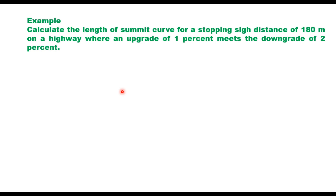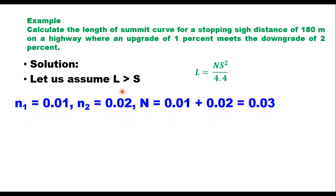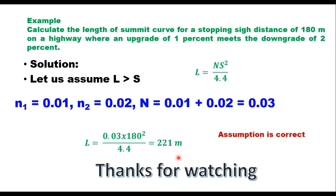Let us take one example: calculate the length of a summit curve for a stopping sight distance of 180 meters on a highway where an upgrade of 1% meets a downgrade of 2%. Assuming first that the length of the curve is more than the SSD, the equation is L = N·S²/4.4. Here N = n1 + n2 = 0.01 + 0.02 = 0.03, S = 180 m. Therefore L = 0.03 × 180² / 4.4 = 221 meters. Since 221 m > 180 m, the assumption is correct, and the answer is 221 meters. Thank you for watching. I hope you understood the concept; please write your suggestions in the comment box.